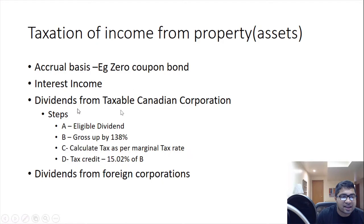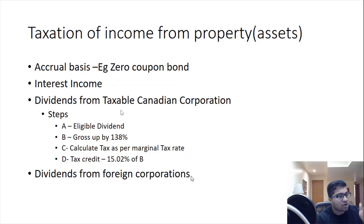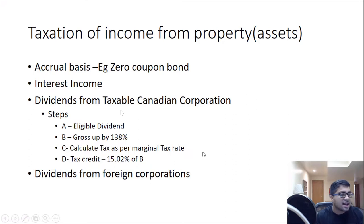Dividends enjoy preferential tax treatment in Canada. They can come from a taxable Canadian public corporation, a taxable private Canadian corporation, or a foreign corporation. In this module, we focus on dividends from taxable publicly traded Canadian companies. Not the entire dividend is taxed — part of it is offset by a tax credit — and the calculation is a five-step process.